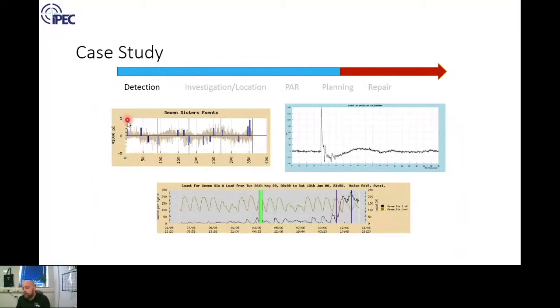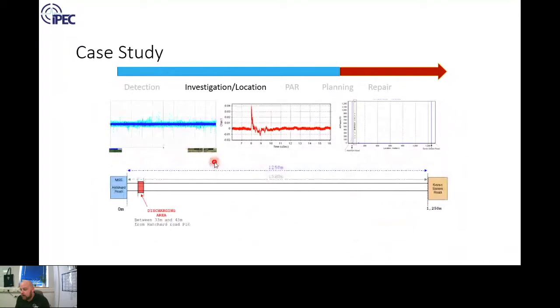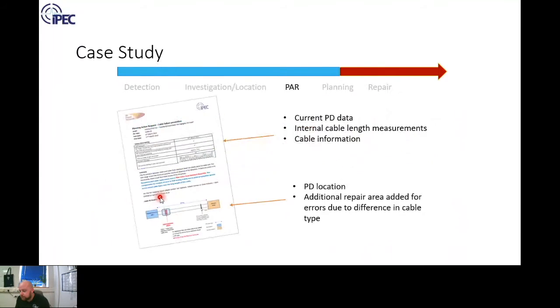Practical example then: PD monitoring - this is the individual PD segment, this is the load information. This is the PD level, and in this example you can see this PD increasing dramatically. We did an online PD location using that sort of method like I said before. Online PD location located to a 10 meter section on a 1250 meter cable. Issue a report to the customer to recommend action.